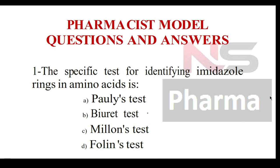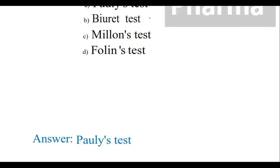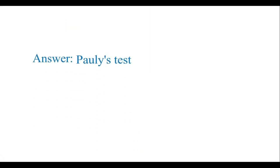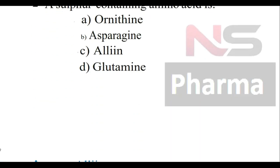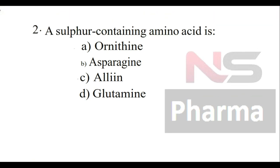First question: The specific test for identifying imidazole rings in amino acids is — Option A: Pauly's test, Option B: Biuret test, Option C: Millon's test, Option D: Folin's test. The answer is Pauly's test.